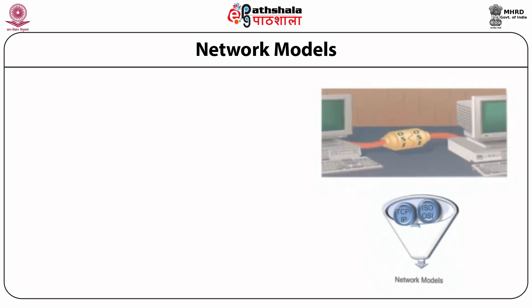Let us discuss the evolution of various models. I will use the terms 'protocol' and 'model' interchangeably since some protocols are also known as models. In 1974, the major IT company IBM built their own network called SNA — System Network Architecture. This was a proprietary model used only by IBM, whose mainframe computers connected with different peripheral nodes, so they defined their own architecture.